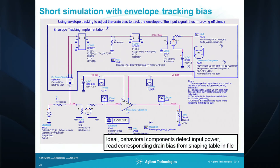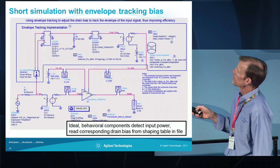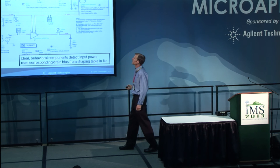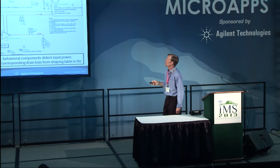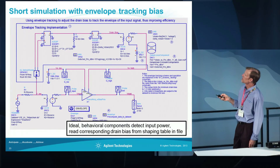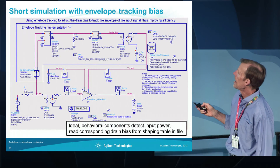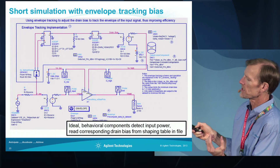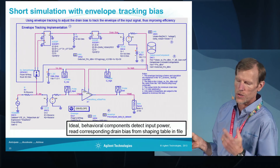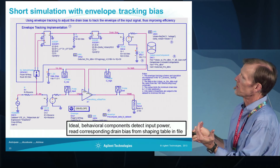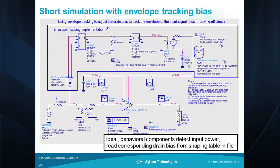This is a schematic for applying envelope tracking. It looks complicated, but in fact it's fairly simple. All the components in the upper part of the schematic are just for detecting the available source power at the input. We measure the available source power of the input modulated signal as a function of time, use that as an index into a data file containing the shaping table data, and then read out the appropriate drain bias to apply to the power amplifier.